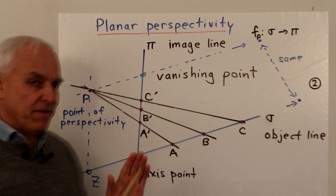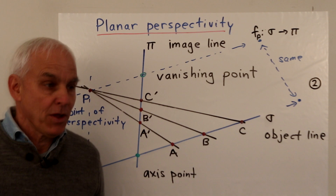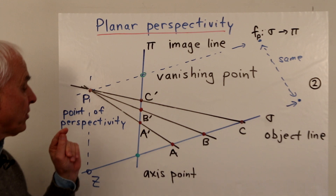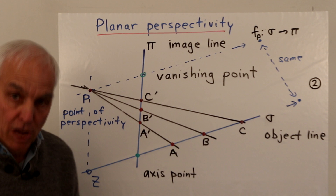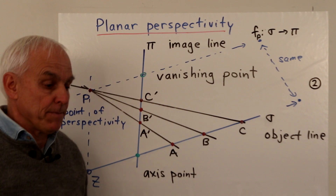In this situation, there are a few extra points which are very important. One of them is the axis point, where the object line and the image line actually meet. Another somewhat more subtle point is the vanishing point, and that's obtained by taking a line through P which is parallel to the object line and seeing where it meets the image line.